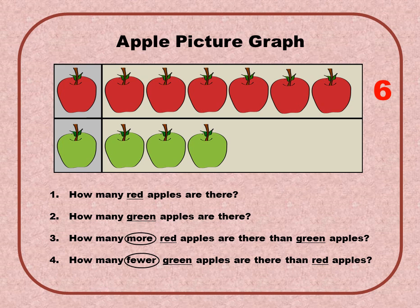Question number two says: how many green apples are there? Let's count the green apples, but remember don't count the first one. Here we go: one, two, three — there are three green apples.